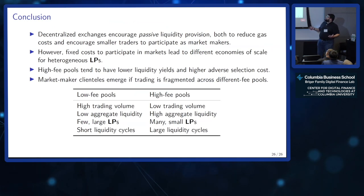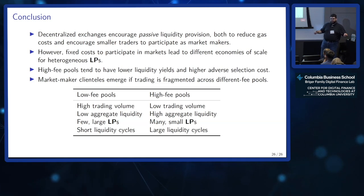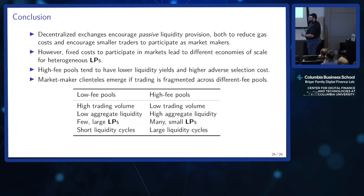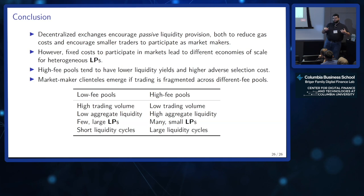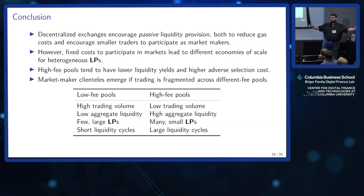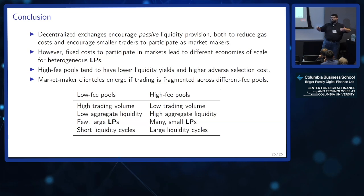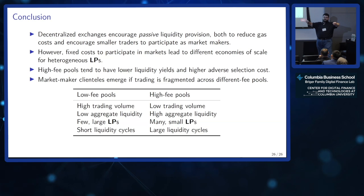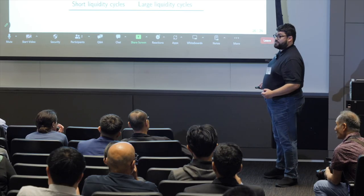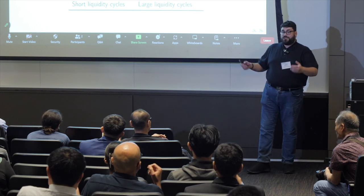To wrap up: decentralized exchanges were supposed to encourage passive liquidity provision. With Uniswap V3, there is a need to actively manage. When you introduce fixed costs into the equation, you get liquidity clientele — two groups that are separate and differ in their willingness to accept fixed costs. What we're working on now is whether this creates a welfare cost. Thanks — happy to take questions.